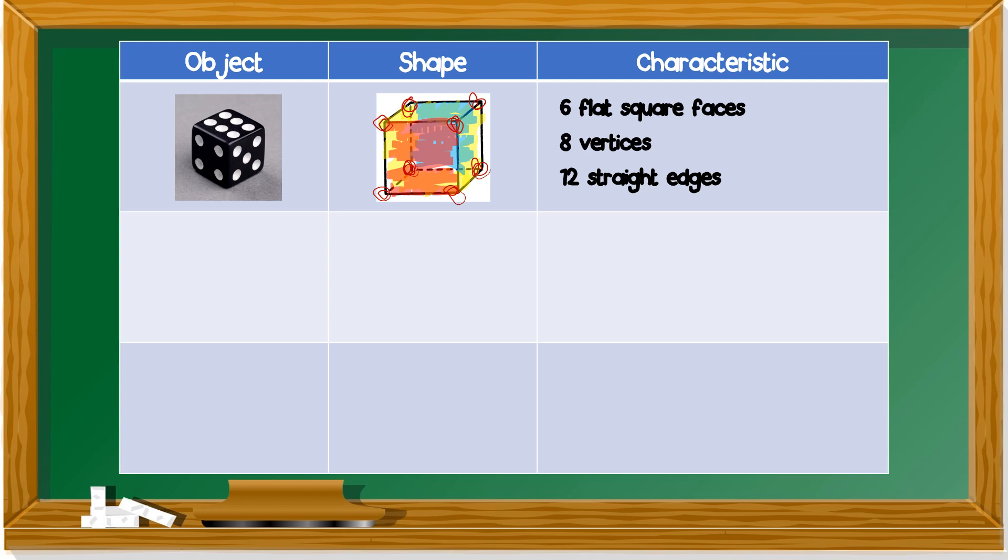It has 12 straight edges. How do you look for the straight edges? One, two, three, four, five, six, seven, eight, nine, ten, eleven, twelve. Twelve straight edges. Edges, tepi dia. Vertices, bucu. Straight edges ialah tepi.